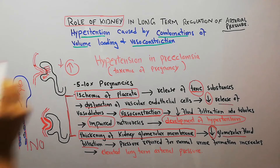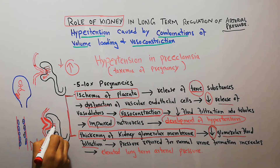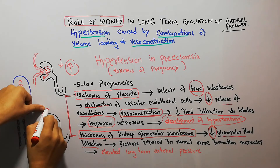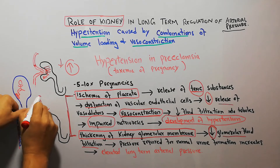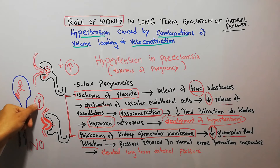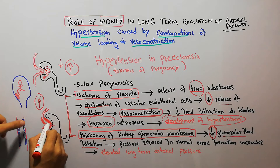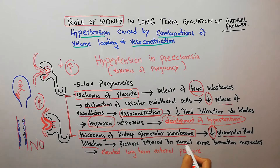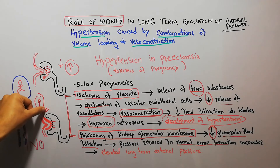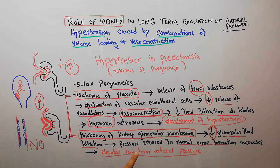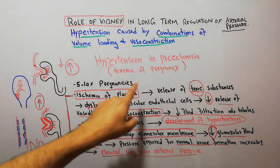When the glomerular membrane thickens, filtration is decreased and there is decreased glomerular fluid filtration. The pressure required for normal urine formation therefore increases. The blood vessels in the glomerulus must increase their arterial pressure — also driven by fluid accumulation and vasoconstriction — to push more fluid through for normal urine formation. Over a long time, this leads to elevated long-term arterial pressure, which causes hypertension in preeclampsia.